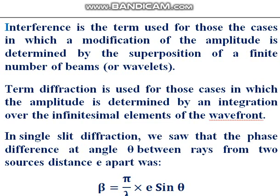In the previous video lesson, we learned that interference is the term used for the modification of amplitude determined by the superposition of a finite number of beams or wavelets — mostly two or three pinholes with a very finite number of wavelets superimposed to give an intensity distribution on the screen. The term diffraction is used for those cases in which the amplitude is determined by integration over infinite elements of the wavefront. This is the basic difference between interference and diffraction.